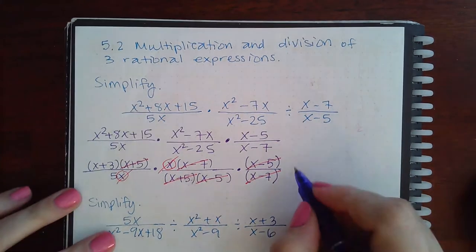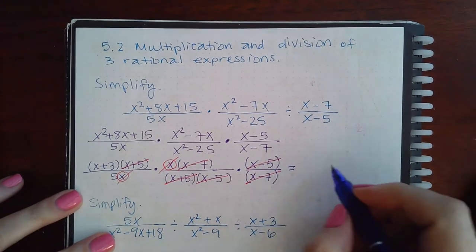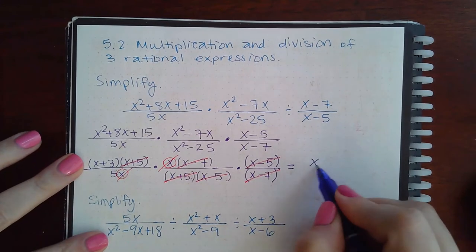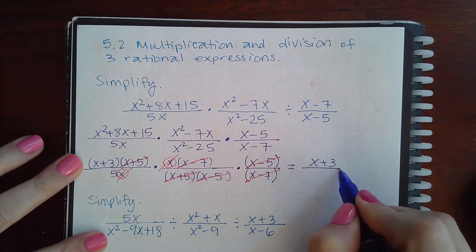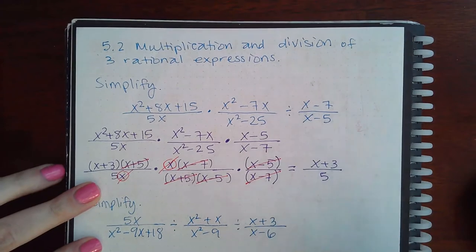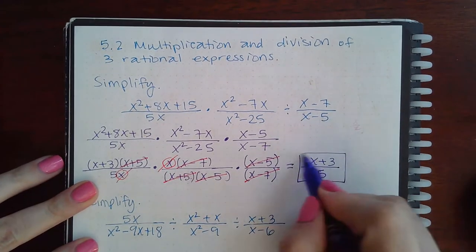And it looks to me like that's all I can cancel, but that was a lot. So I am left with x plus 3 all by itself in the numerator and a 5 in the denominator. And so this is the final answer.